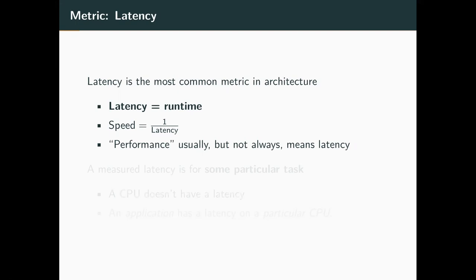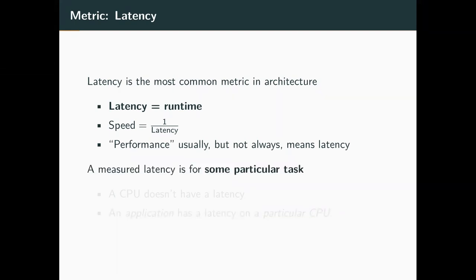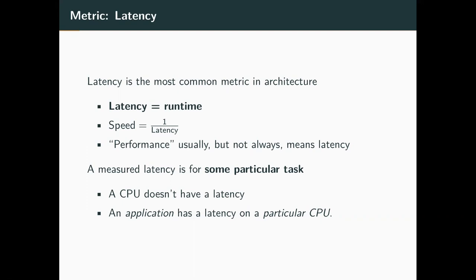Whenever we talk about performance, most likely what we're talking about is latency. Obviously, if latency goes down, that's a good thing. Since speed is the inverse, more speed the better. Now, it's important to be precise with how we talk about latency. Latency only applies to a certain or particular task. We can't say something like, oh, this CPU has low latency or high latency — that's not a thing. What we can say is that a specific application has a latency on a particular CPU.